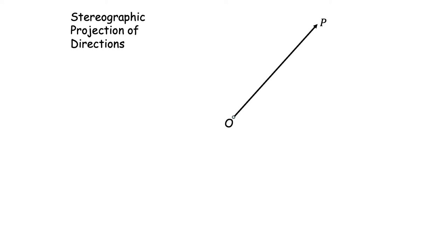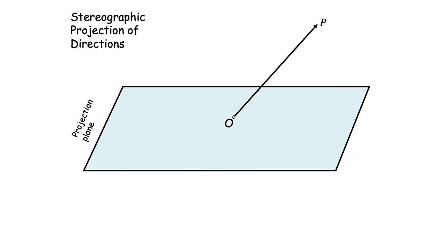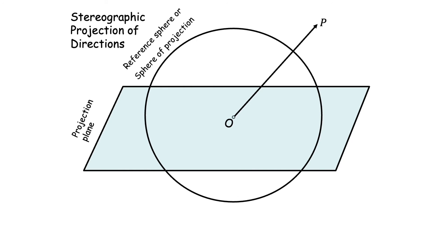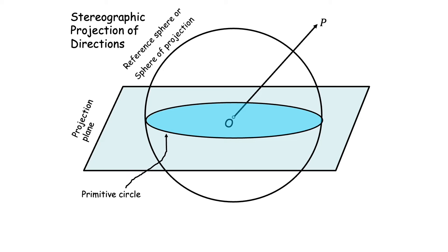Let us look at how the stereographic projection of a direction is constructed. OP is the direction of interest, drawn from an origin O. I let the plane of projection pass through that origin, and I also introduce a sphere of given radius r — any arbitrary radius can be selected — known as the reference sphere or sphere of projection. This sphere will intersect the projection plane in a circle called the primitive circle. The direction will also intersect the sphere at some point P-prime, which we call the spherical projection of the direction OP.